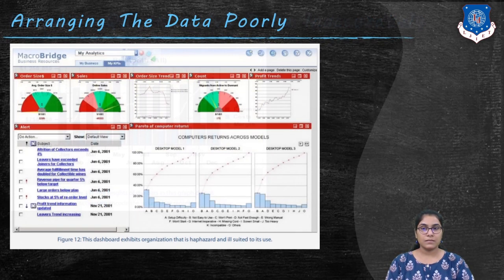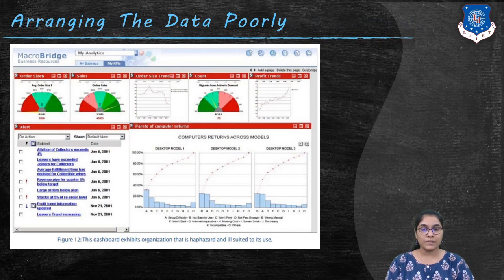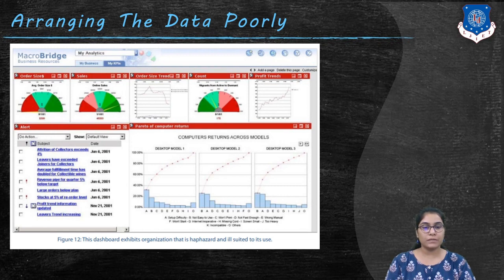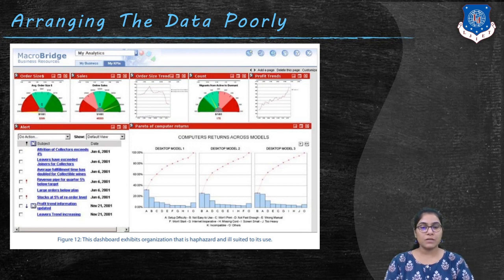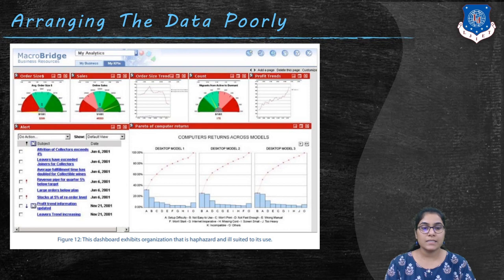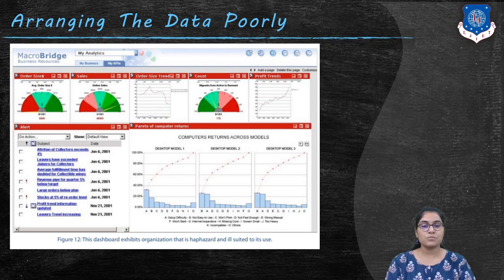The next design issue is arranging the data poorly. When designing a dashboard you cannot put the pieces of information together in any old way that they seem to fit. If a dashboard isn't organized with appropriate placement of information based on importance and desired viewing sequence, along with visual design that segregates data into meaningful groups, the result is a cluttered mess. The goal is not simply to make the dashboard look good, but to arrange the data in a manner that fits the way it's used.